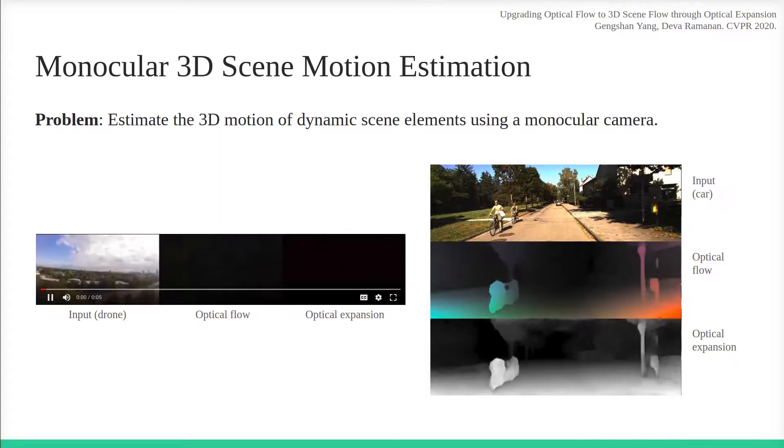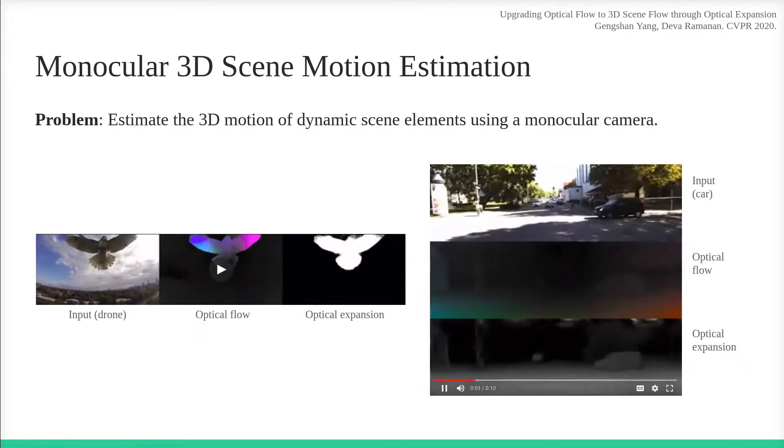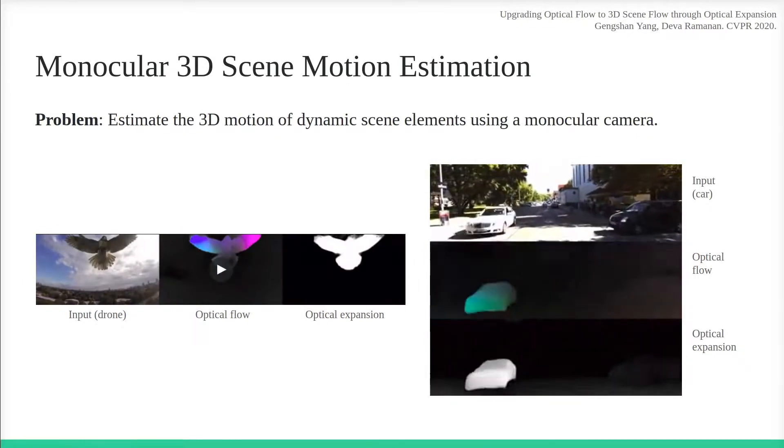Estimating the 3D motion of dynamic scene elements is important for autonomous robots, including aerial drones and ground vehicles. This can be cast as a problem of monocular 3D scene flow estimation.